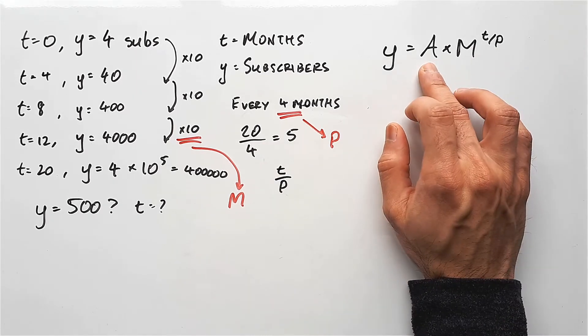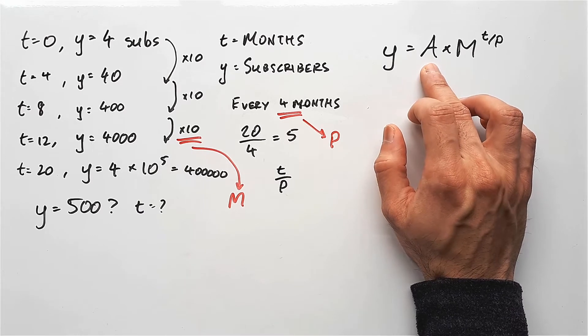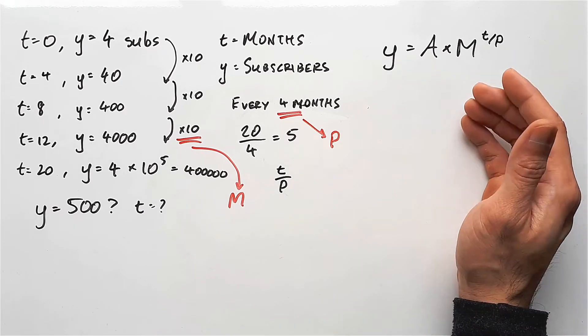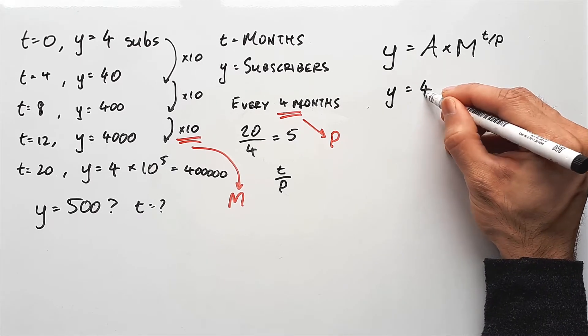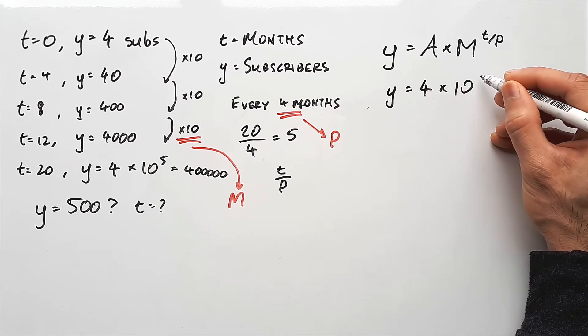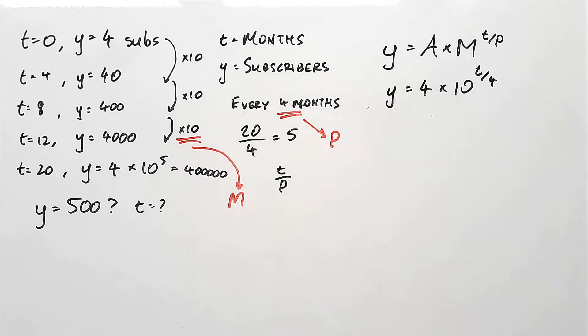The only thing we don't know here is A. A is meant to be the amount that you start with. So that's really easy. It's just equal to 4, which means this equation is simply 4 times 10 to the power of t over 4.